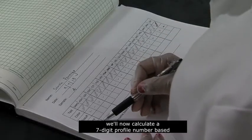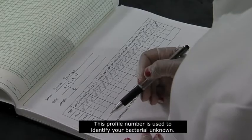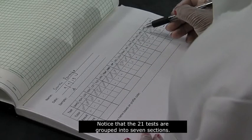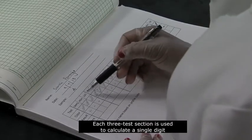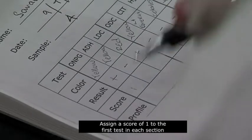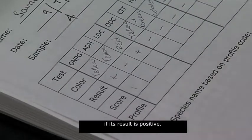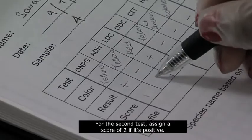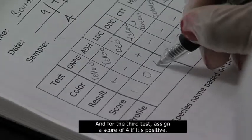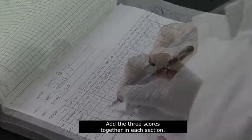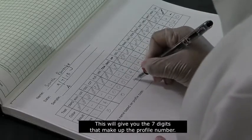With all the test results recorded, we'll now calculate a seven-digit profile number based on those results. This profile number is used to identify your bacterial unknown. Notice that the 21 tests are grouped into seven sections. Each three-test section is used to calculate a single digit of the profile number. Assign a score of 1 to the first test in each section if its result is positive. Otherwise, assign a 0. For the second test, assign a score of 2 if it's positive. And for the third test, assign a score of 4 if it's positive. Add the three scores together in each section. This will give you the seven digits that make up the profile number.